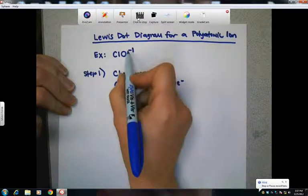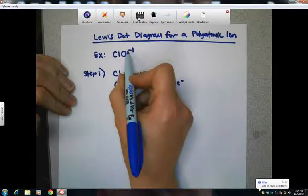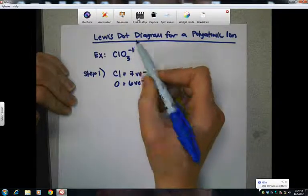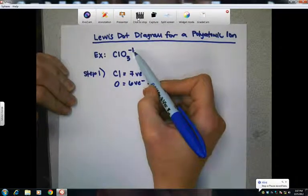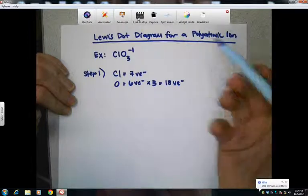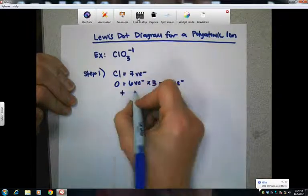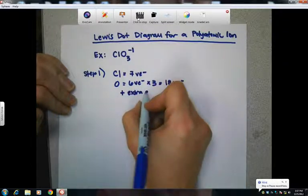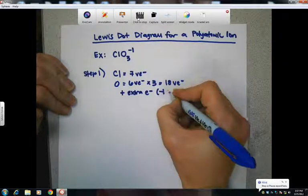And then you need to remember that this negative one charge right here, that negative one charge says that there's an extra electron. It's got one more electron than it should have. So we need to add an extra electron because of that negative one charge.